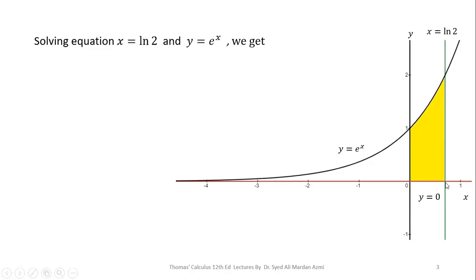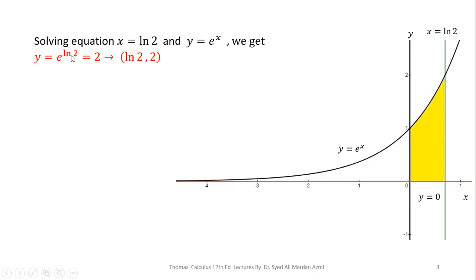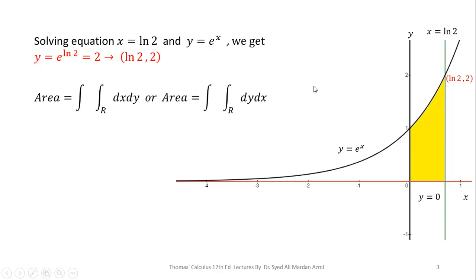In the next step we must identify the corner points. We have the origin (0, 0), the point on the x-axis at x = ln(2), and the point where x = ln(2) meets y = e^x. To find that intersection, substitute x = ln(2) into y = e^x: y = e^(ln 2). Since e and ln are reciprocal functions, y = 2. So the coordinate of that corner point is (ln 2, 2).